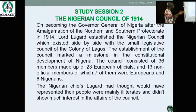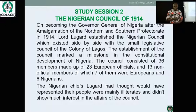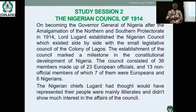Section Two covers the Nigerian Council of 1914. On becoming Governor-General of Nigeria after the amalgamation of the Northern and Southern Protectorates in 1914, Lord Lugard established the Nigerian Council. This implies that the history and journey of the Nigerian constitution began in 1914.